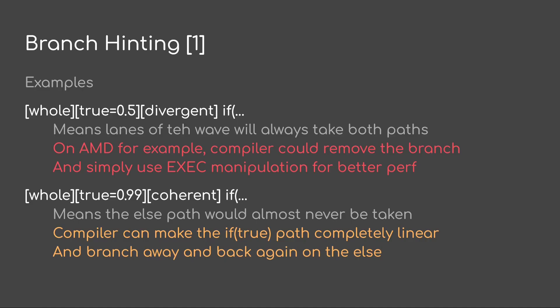Here are some examples of mixing these together. If I do whole, true_0.5, and divergent, that means the lanes of the wave will always take both paths. On AMD, for example, the compiler could remove the branch and simply use the EXEC mask modification for better performance.